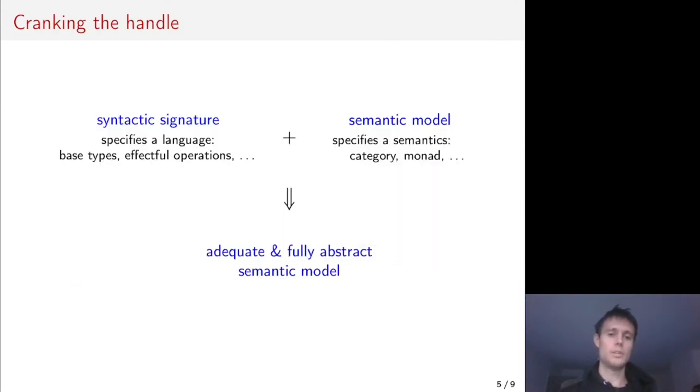How does this work? You choose a syntactic signature, so you choose a specification of the language, namely the base types, the effect operations and so on, together with a semantic model for this language, and then subject to some conditions on the model, our construction will yield an adequate and fully abstract semantic model.